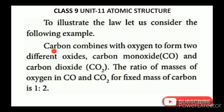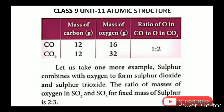To illustrate: carbon combines with oxygen to form two different oxides — carbon monoxide and carbon dioxide. The ratio of masses of oxygen in carbon monoxide to carbon dioxide, for a fixed mass of carbon, is 1 is to 2. Similarly, sulfur combined with oxygen forms sulfur dioxide and sulfur trioxide; the ratio of oxygen is 2 is to 3.